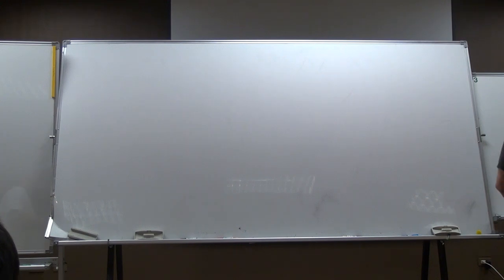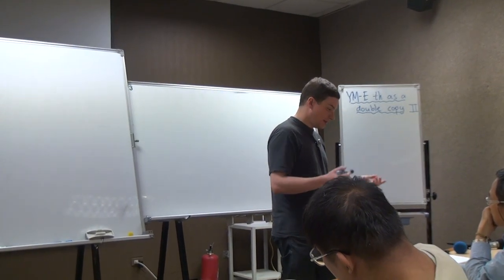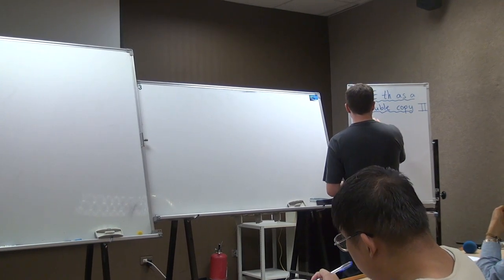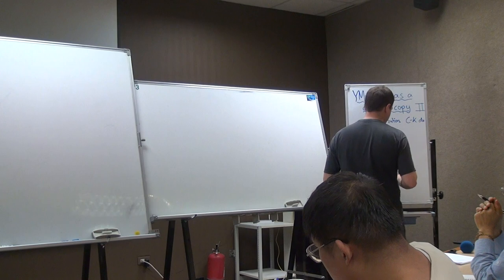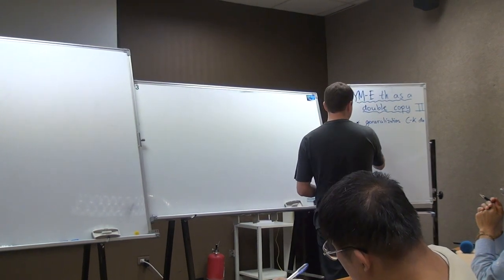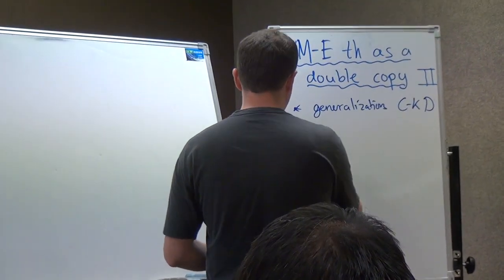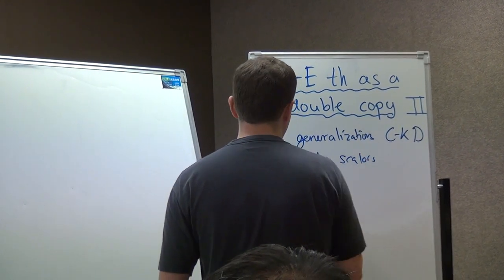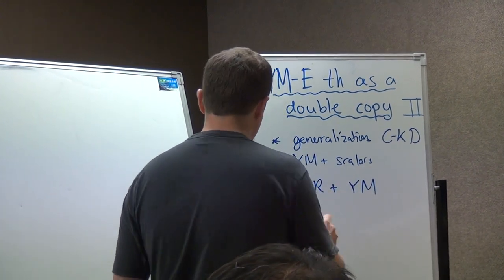After the sessions, Henry will finish his talk on the Yang-Mills-Einstein theory as a double copy. The outline of this talk is that first we'll talk about possible generalizations of color-kinematics duality. Then I will talk about a particular simple theory, which is Yang-Mills theory coupled to scalars, and how this is related to gravity coupled to Yang-Mills theory. And then I will give some examples at loop level.